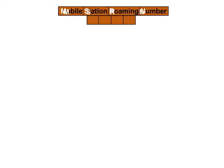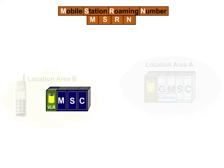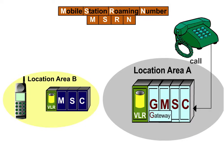The Mobile Station Roaming Number, MSRN, is a temporary number produced for routing the call in case of a mobile terminated call. MSRN is generated within the serving MSC/VLR, that is, where the mobile station just happens to be at that moment.